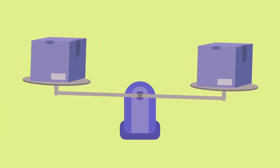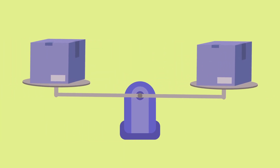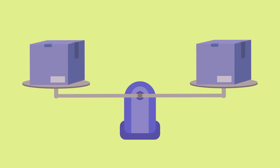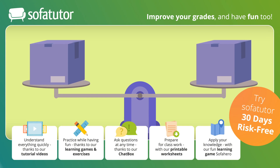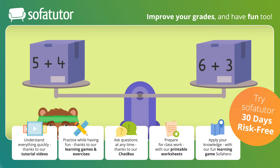Let's take a look at Mr. Squeaks' first box. The first box on his scale has the expression 5 plus 4, and the second box on his scale has the expression 6 plus 3. We need to compare these two expressions to see if they are equal or not equal.